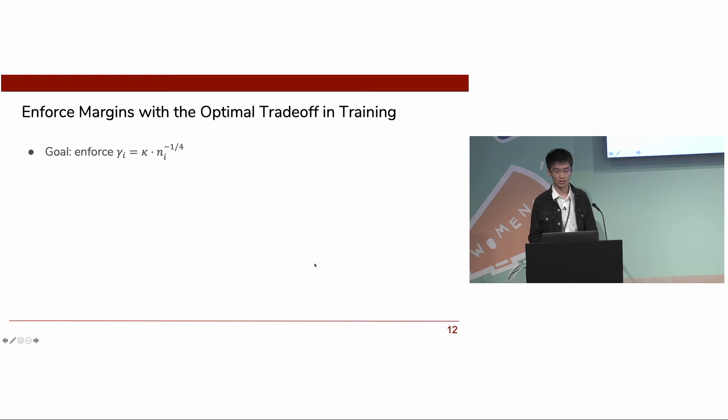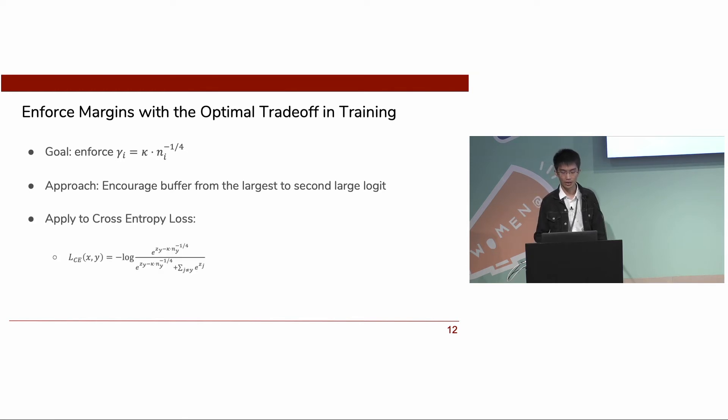So the question left is: how do we enforce the optimal margin for each class during training? The way we enforce it is to encourage a buffer from the largest to the second largest logit. If we apply it to cross entropy loss, we get the following form. We name it label distribution aware margin loss. Here, kappa is a hyperparameter that we could tune. The high-level idea is to have the maximum kappa that the model's capacity could allow us to fit.